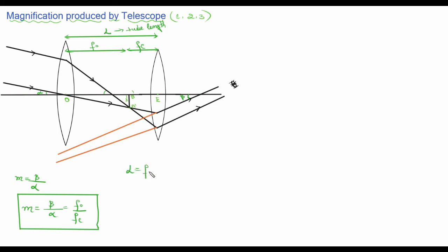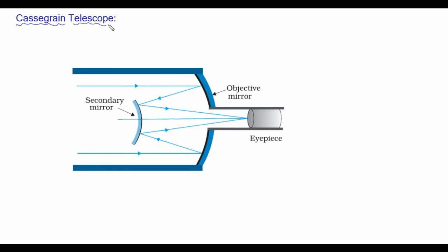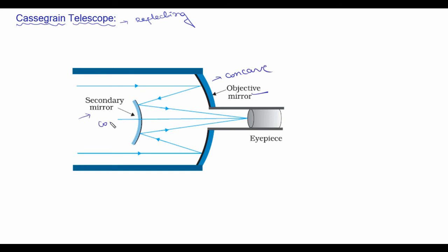The next type of telescope is the Cassegrain telescope, designed by a scientist named Cassegrain, which is why it was named after him. This Cassegrain telescope is an example of a reflecting type of telescope where mirrors are used. This diagram represents the Cassegrain telescope, and here 3 marks questions can be asked — either to write a note on it or to explain it.